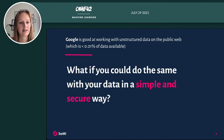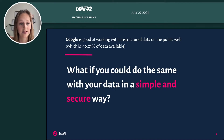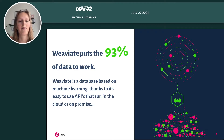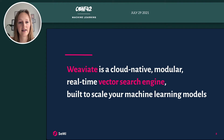The main question here is: what if you could do the same with your own data in a simple and secure way? The answer that we came up with is VEV8. VEV8 is a database that uses machine learning to understand the data that is in it. VEV8 is a cloud native, modular, real-time vector search engine that is built to scale your machine learning models.